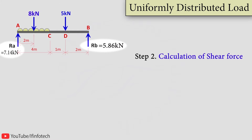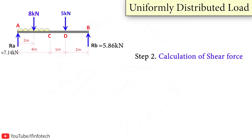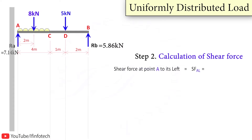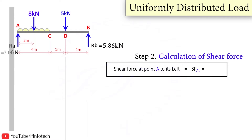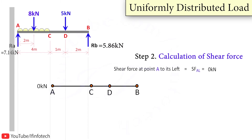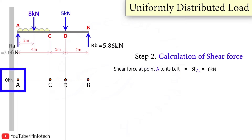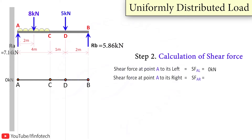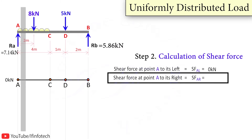Step number 2 is shear force calculation. The sign convention is upward force treated as positive and downward force treated as negative. We start shear force calculation from the left hand side. To calculate shear force at point A, I take the section to the left of point A. There are no forces on the left hand side, so Sf at A to the left is equal to 0. I draw a horizontal reference line of 0 kN. Moving to the section to the right of A, there is upward reaction force Ra which is 7.14 kN, so the shear force is plus 7.14 kN.